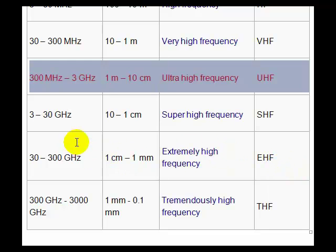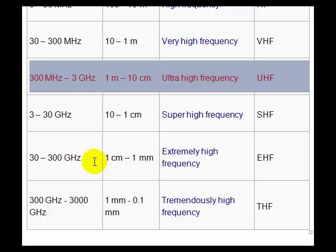Interestingly, there is one range which is from 300 MHz to 3 GHz. There are certain frequencies, for example 315 MHz and 2.4 GHz, which are free frequencies for experimental purposes. Otherwise, all other frequencies in the radio frequency range are licensed bands and one is not free to use these frequencies at their own will.